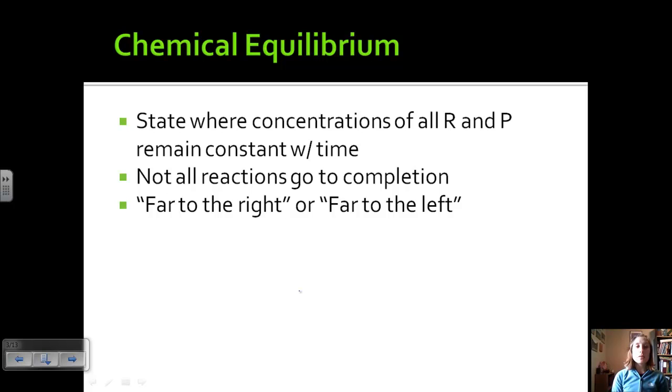When things go to equilibrium, they're either far to the right or far to the left. Far to the right means that at equilibrium we have mostly products, but we still have some concentration of reactants left, but more products than reactants. When it's far to the left, we have a larger concentration of reactants than products. Not much product has been produced. We still have a lot of reactants.